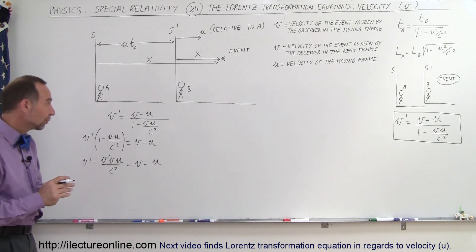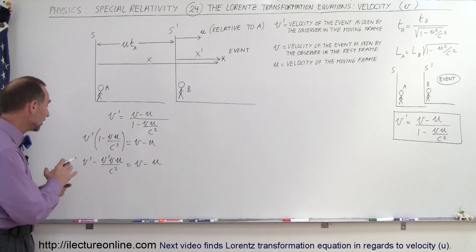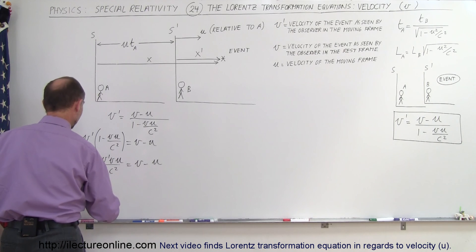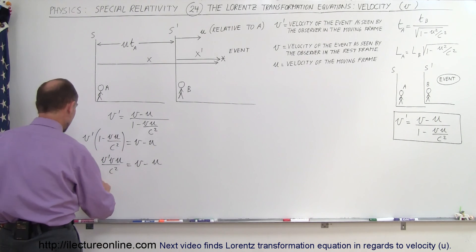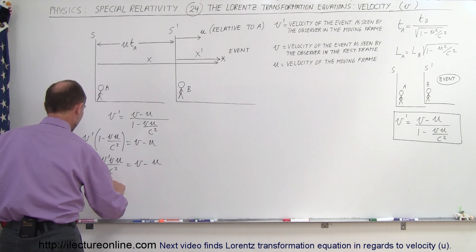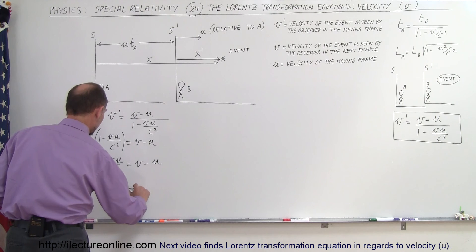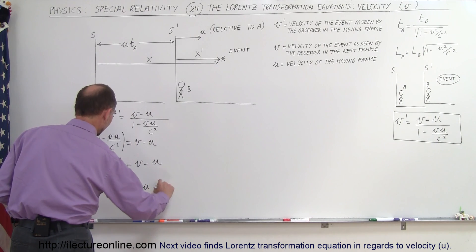So now we want to move all the terms that have V over to one side of the equation and everything else to the other side of the equation. So we're going to move this to the left side of the equation. So we get V, that would become a minus V minus V' VU over C squared is equal to minus U minus V'.